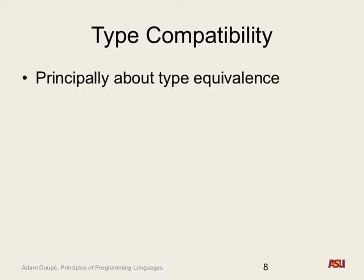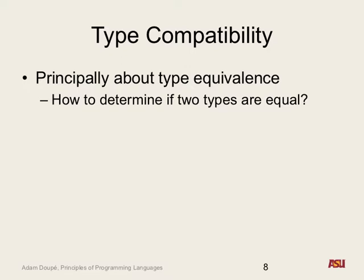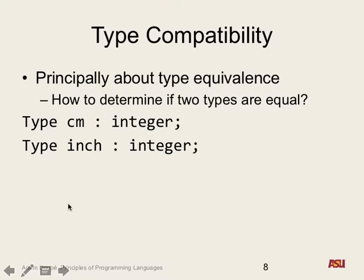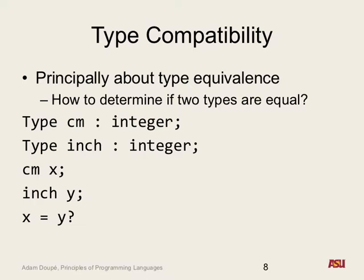The main question we want to answer with type compatibility is: are these two types equivalent? Let's look at some examples. We're constructing a new type called centimeter defined as an integer, and a new type inch defined as an integer. Variable x has type centimeter, and variable y has type inch. Can we say x equals y? I mean yes, they're both integers, but their types are not the same.